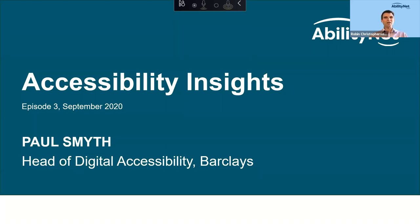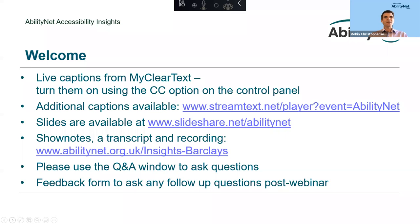Hi guys, hopefully you can all hear me fine. It's Robin Christopherson here. Welcome, thank you so much for coming to this, the third episode in our Accessibility Insights series where we have brief chats with the top names in accessibility and digital inclusion across the globe. Absolutely fitting that bill is this month's guest, Paul Smythe, Head of Digital Inclusion at Barclays, one of the leading retail banks in the UK.